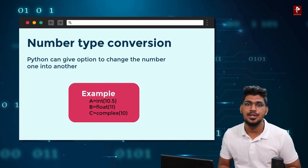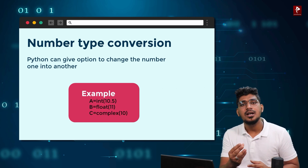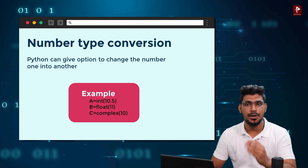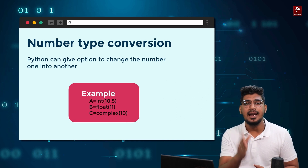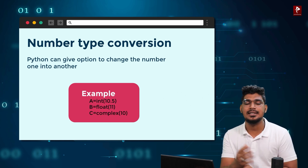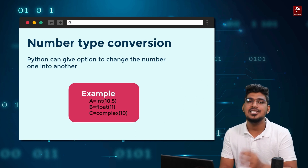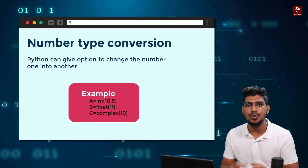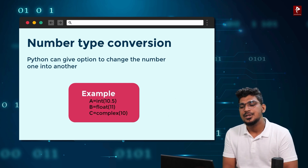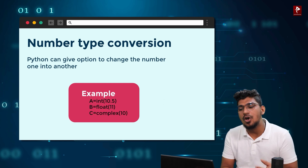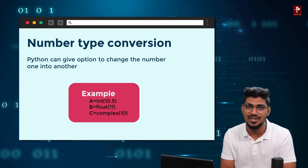How to convert number types? For example, you can change a number — like integer into float, or float into integer. With the help of some keywords, you can convert one type into another. Python gives the option to change the number from one type to another.